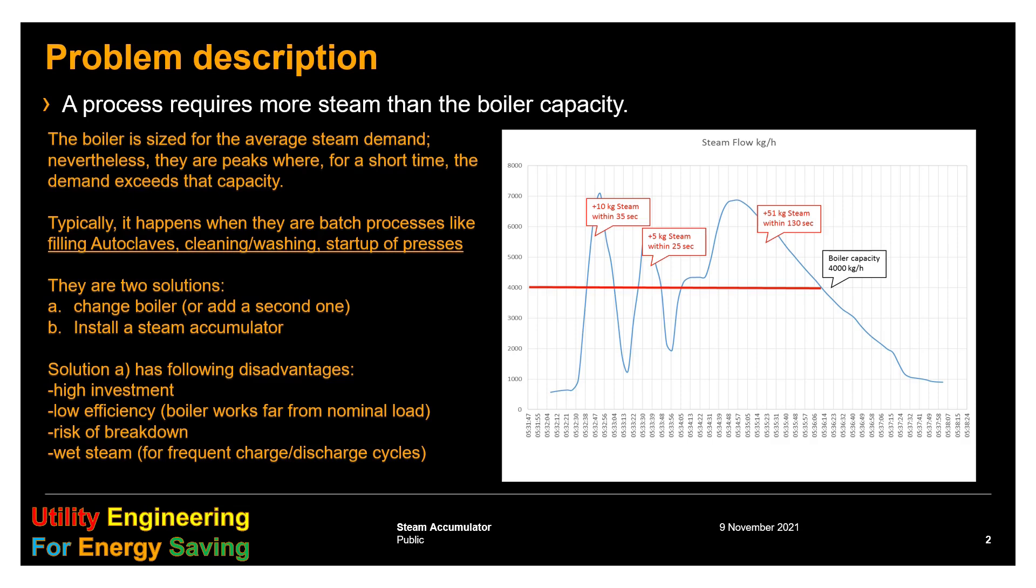On the right side we have a record of steam demand versus time. The boiler capacity is only 4000 kg per hour, while the process has positive and negative peaks. The positive ones cannot be supplied by the boiler, or if they do, the pressure drops significantly.